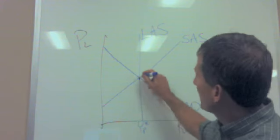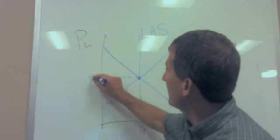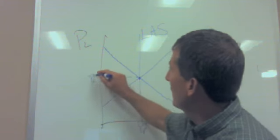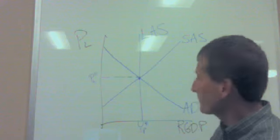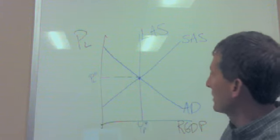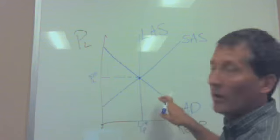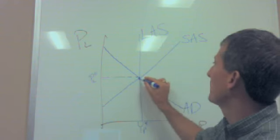And so this is your home base. There's some sort of existing level of prices. So I might put a little PL zero there for the existing price level. And then we're at the potential level. This would be a long run equilibrium when all three lines cross.